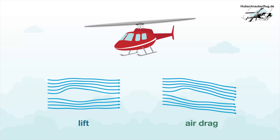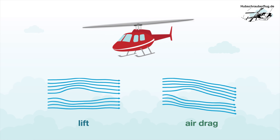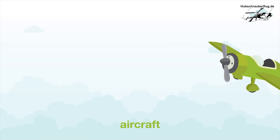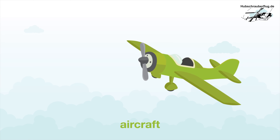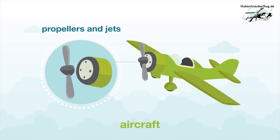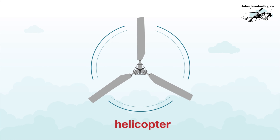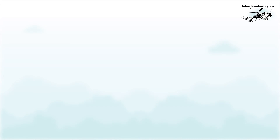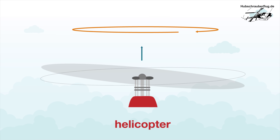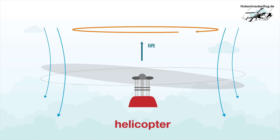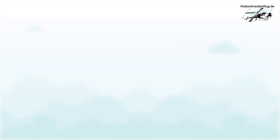In a helicopter, the greater the angle of attack of the rotor blades, the more operating power that is required. In an aircraft, propulsion is provided by either a propeller or a jet engine. In the case of a helicopter, the rotor is powered by piston engines or turbines. The rotor blades constantly spinning at the same speed create lift and accelerate the air from above to below.